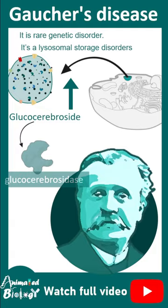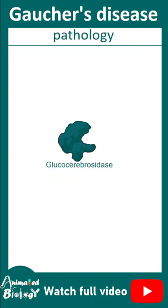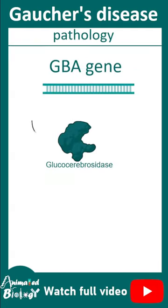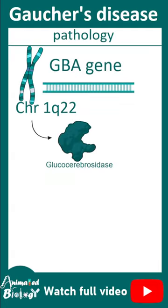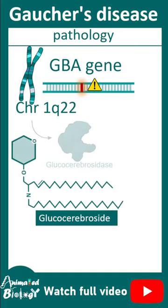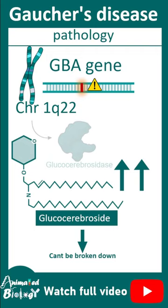The glucocerebrosidase enzyme is encoded by the GBA gene, which is present on chromosome 1. In a mutation where glucocerebrosidase activity is lost, glucocerebrosides accumulate because they cannot be broken down — that is the disease pathology.